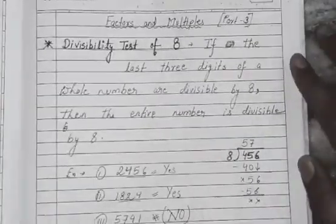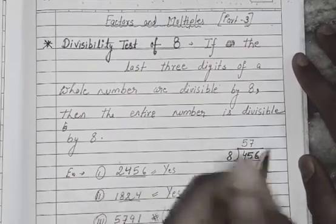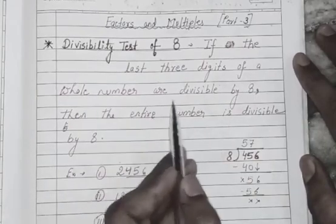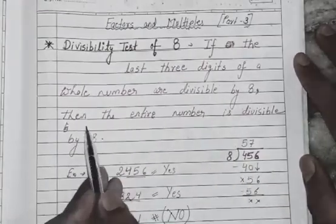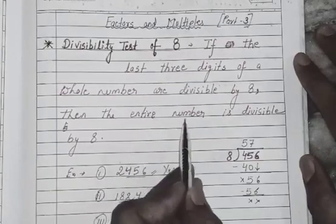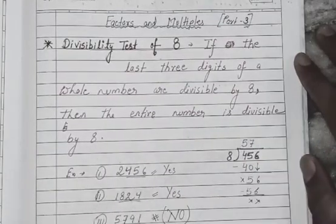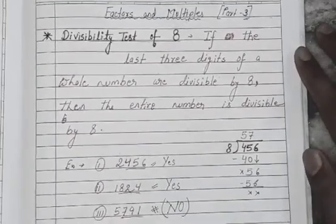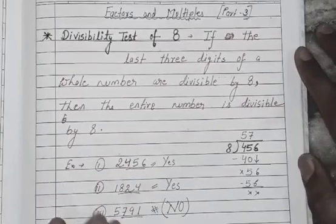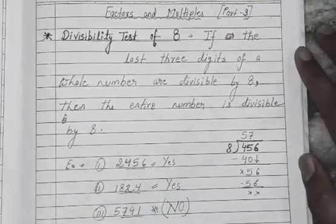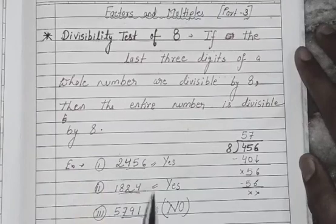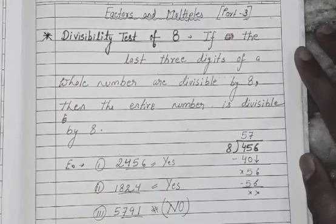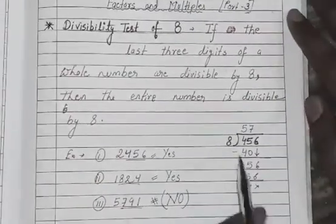So what is the divisibility test of 8? If the last three digits of a whole number are divisible by 8, then the entire number is divisible by 8. We have to check only the last three digits — if those are divisible by 8, the entire number will also be divisible by 8. This is the shortcut way to check.